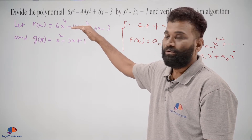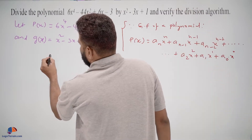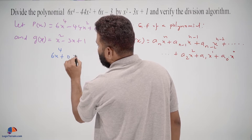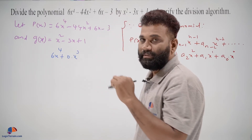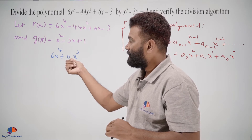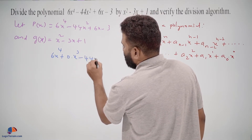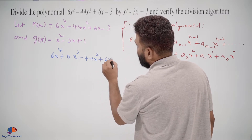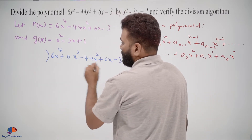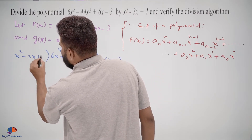We rewrite the dividend as 6x to the power of 4 plus 0·x cube — since the x cube term is missing, we write 0 into x cube — minus 44x square plus 6x minus 3, and we are dividing this by x square minus 3x plus 1.